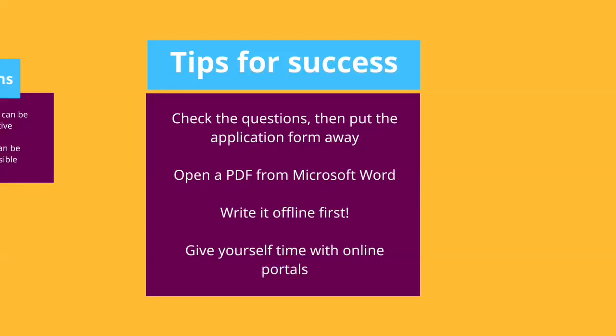Look at the questions and check for anything unexpected, like a policy or approach, and then put it away. Go back to your theory of change and case for support. Make sure you understand what you are going to do, why, how, and how much you are asking for. Then check this against what they are looking for and find the common ground to talk about. These will be your key messages. Then reopen the application form, match your key messages to the answers. Once you have completed the application form, check you've got the most important messages into your answers and if there is anything missing.